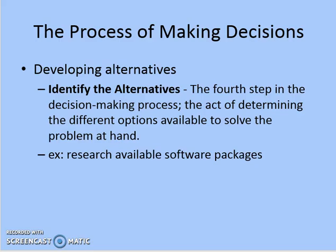The next stage in the decision making process is developing alternatives. Identifying alternatives is the fourth step — the act of determining the different options available to solve the problem. In every problem, there must be different ways to solve it. These alternatives are generated, analyzed, and the most suitable one is selected. In our example, this means researching available software packages and finding out which vendors provide nutrient analysis software and what their latest versions offer.